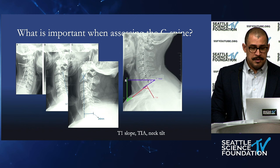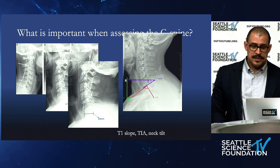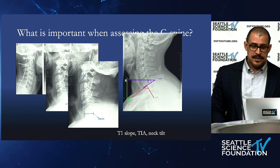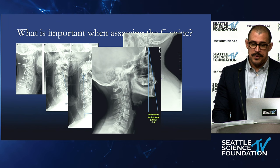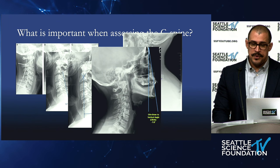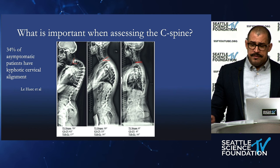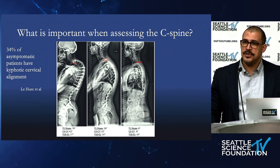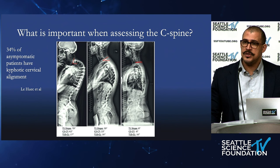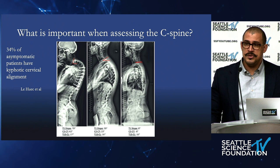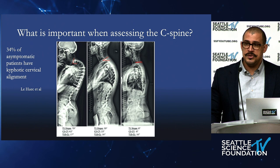Other measures include C2–7 SVA, T1 slope, thoracic inlet angle, and neck tilt — all interchangeable, giving an idea of separate things. The chin-brow vertical angle is another one. You don't need to measure every single one when examining a patient, but some are important. One very useful tool is T1 slope. The main reason I find it useful is because it tells you more about the entire spine, as opposed to just the cervical spine.